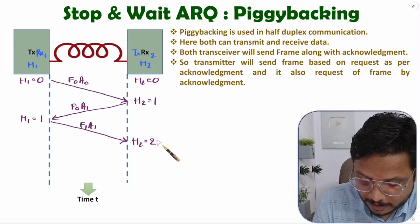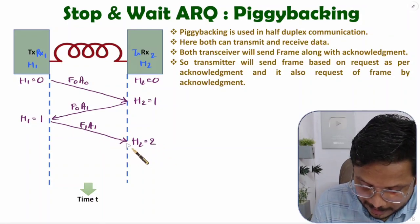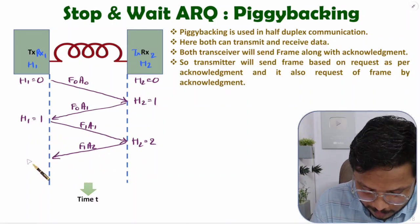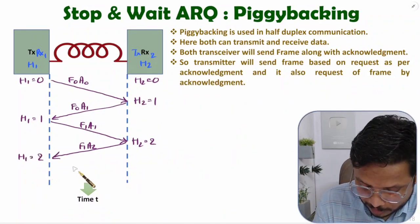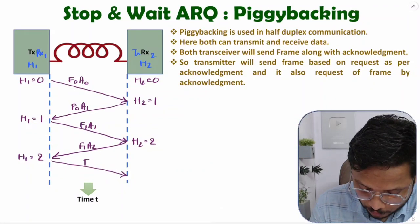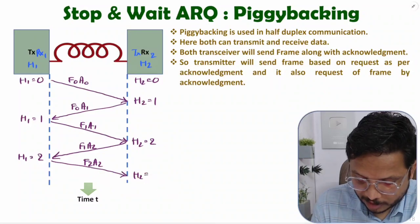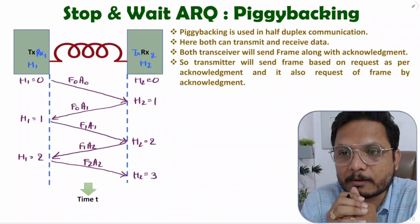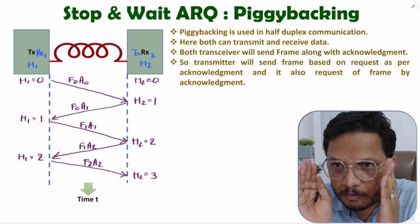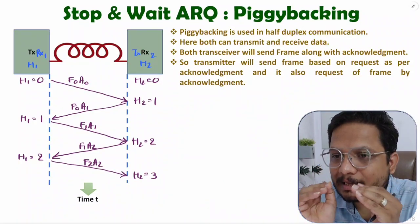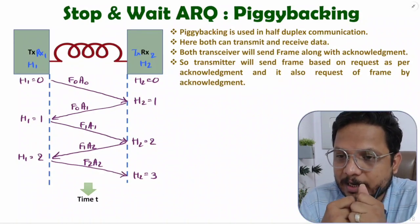Host 2 receives frame one and its variable changes to 2, meaning it now wants frame two. It forwards frame one (acknowledging host 1's request) and asks for frame two. Once this reaches host 1, its variable changes to 2 and it forwards frame two, asking for frame two. Host 2 receives frame two and changes its variable to 3. This is how piggybacking continues — each frame carries both data and an acknowledgement.